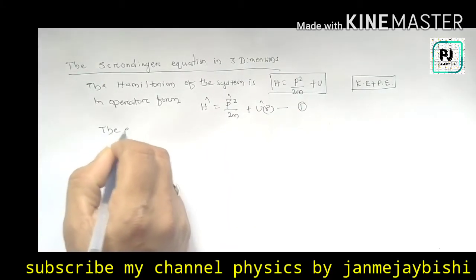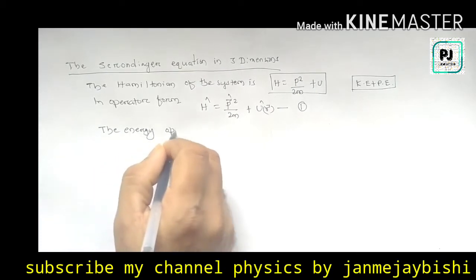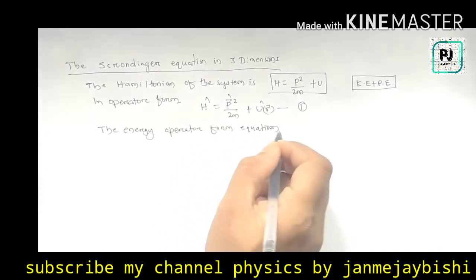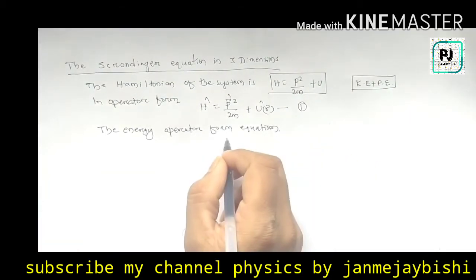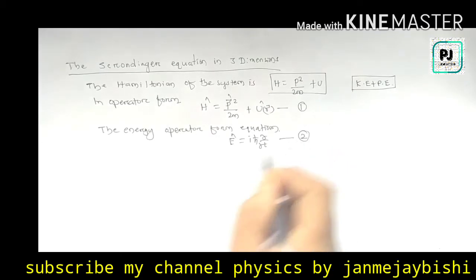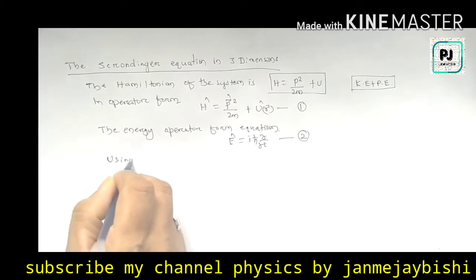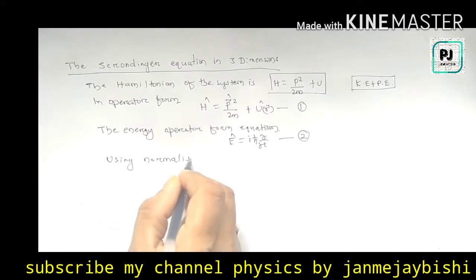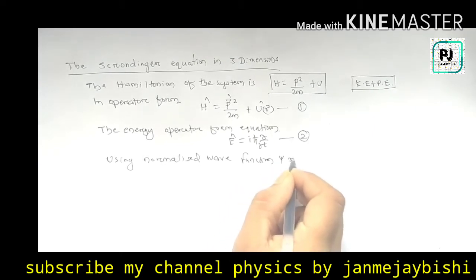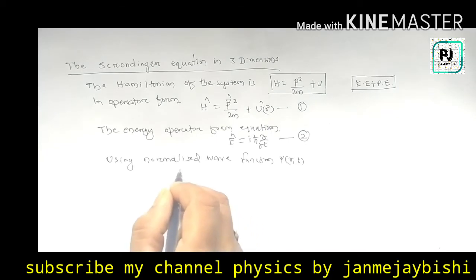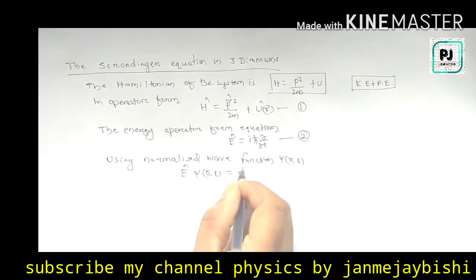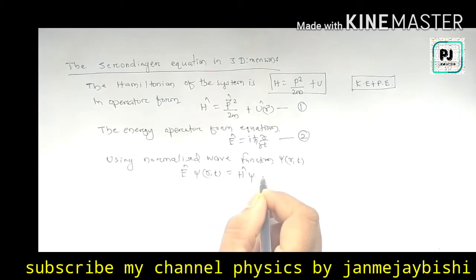I will take this as equation 1. Now, the energy operator form equation: E is equal to iħ del ψ del t. This is equation number 2. Applying it to a normalized wave function φ(r,t), the formula gives E φ(r,t) = H φ(r,t). This is equation number 3.